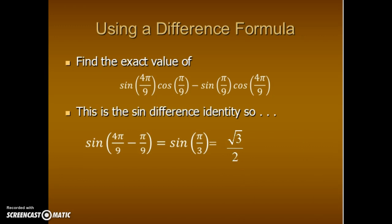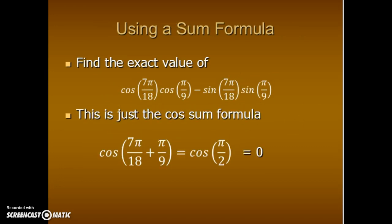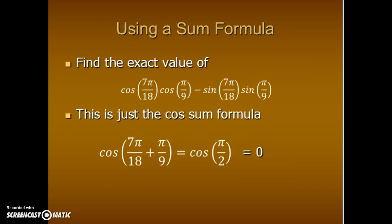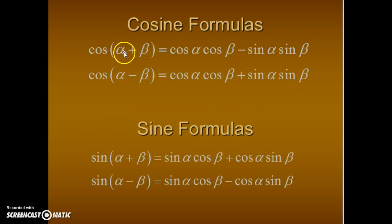It's pretty straightforward to use the sum and difference formulas. We can either be given information in expanded form and condense it, or be given the condensed form and expand it. The next example: find the exact value of cosine of 7π over 18 times cosine of π over 9 minus sine of 7π over 18 times sine of π over 9. I recognize this as a cosine formula — it's cosine-cosine minus sine-sine — so it's either the cosine sum or cosine difference formula. Noting the minus between the terms, this matches the cosine sum formula.